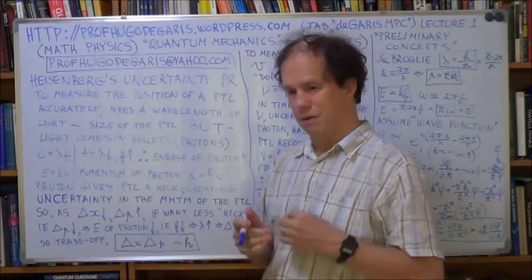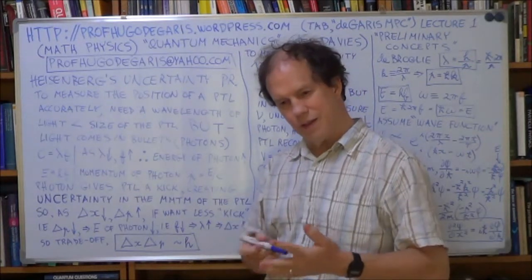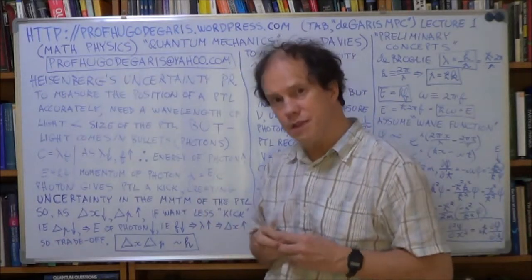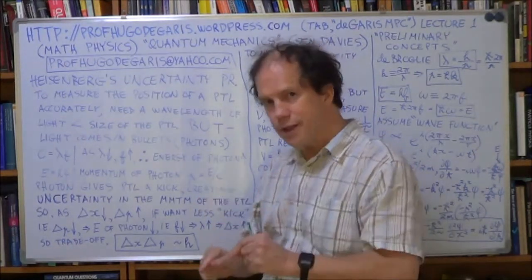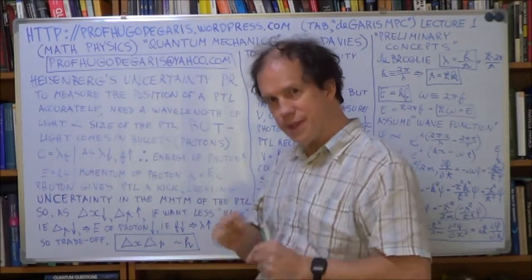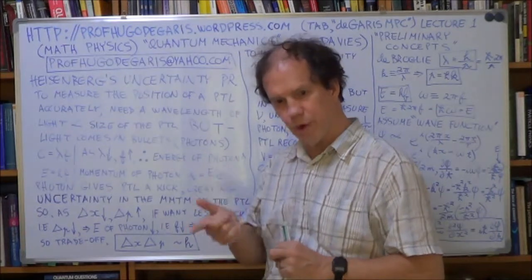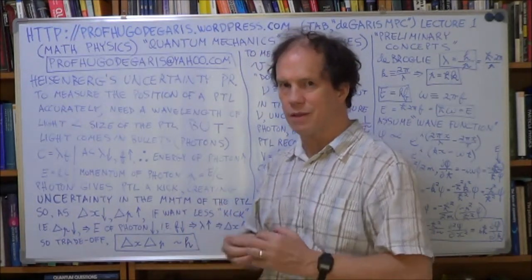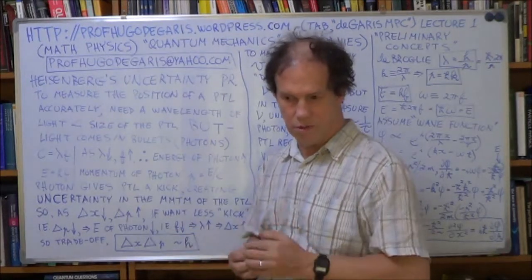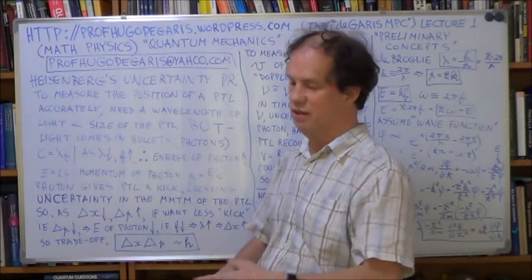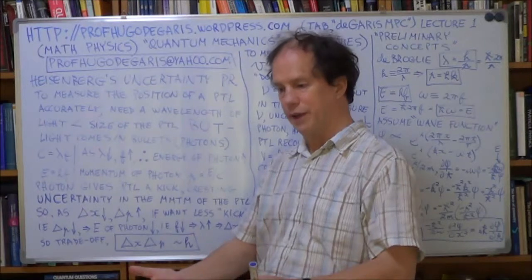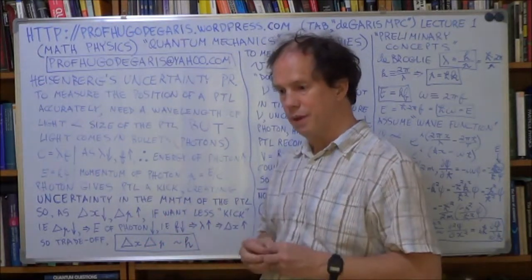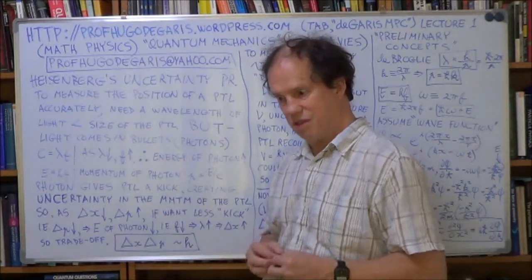The reason for that is essentially the tools that you're using to make these measurements are themselves quantum systems, and hence have quantum properties. And that reality places constraints on what you can do with measurement. You just can't measure both position and momentum of a particle at the same time with infinite accuracy. You just can't do it.